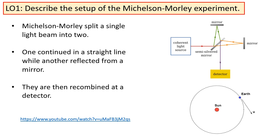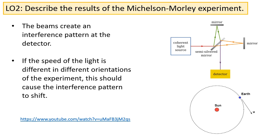The Michelson-Morley experiment splits a single beam of light into two. One beam of light travels in a straight line towards a mirror, while another is reflected towards a separate mirror. They are then recombined at a detector. When the beams are recombined, they form an interference pattern at the detector. If the speed of light is different in different orientations of the experiment, then this should cause the interference pattern to shift.